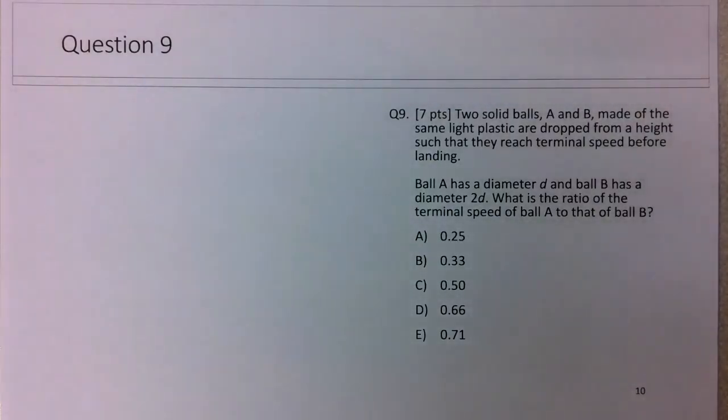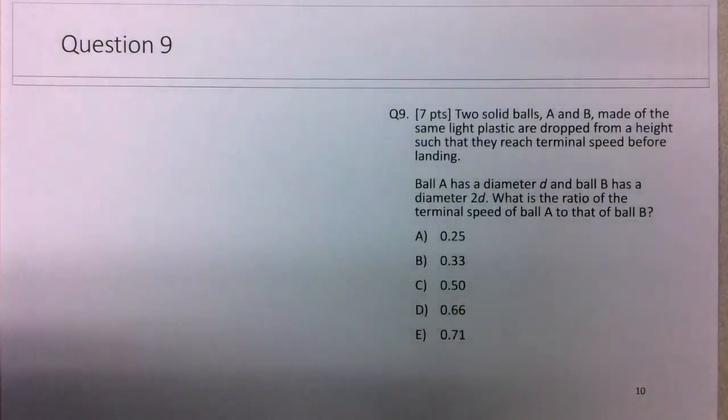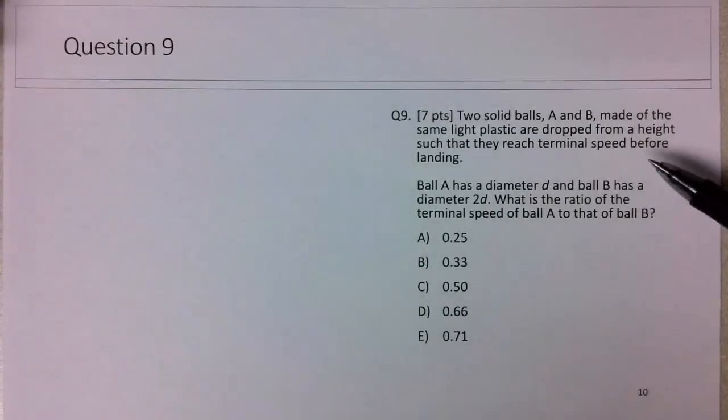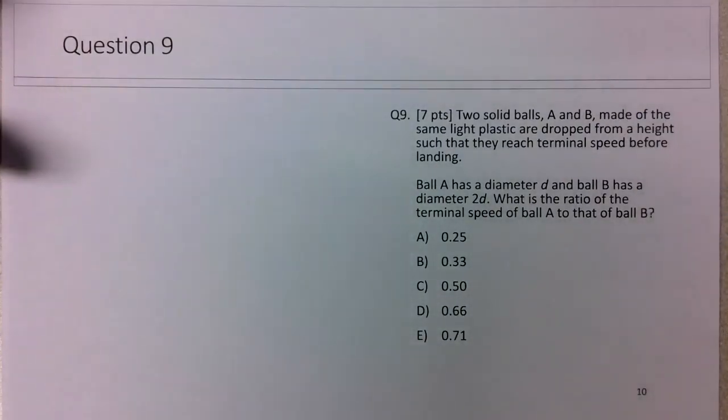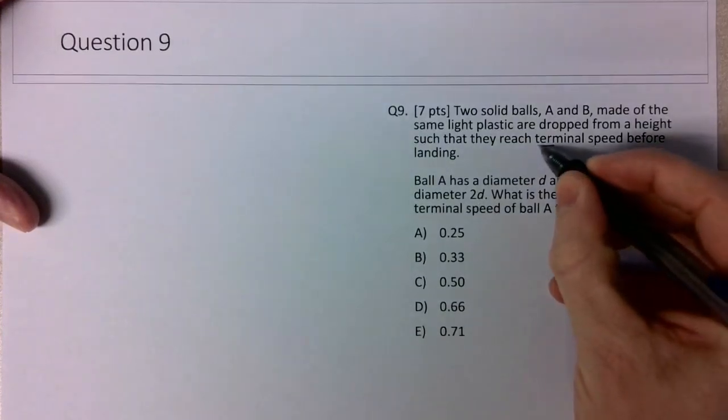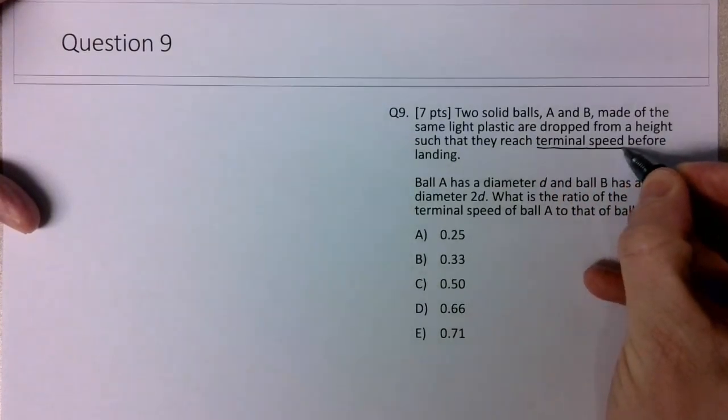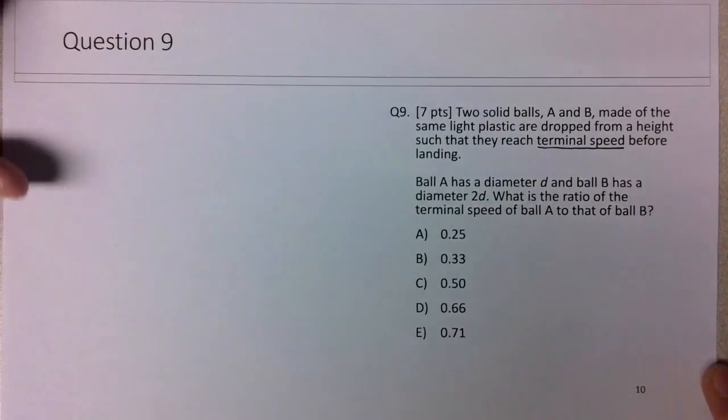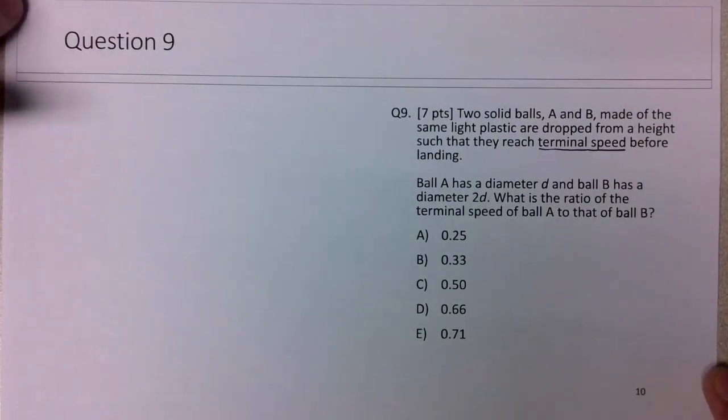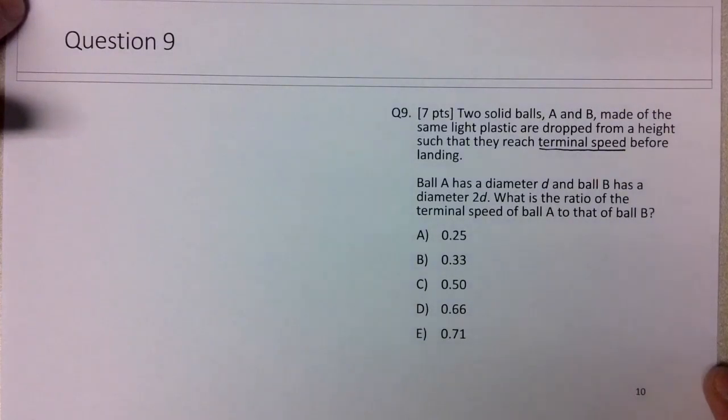In question 9 of the final exam review, we're looking at a drag question. You can tell from the code here that it's at terminal speed. It doesn't explicitly state that this is a drag question, but the concept of terminal speed is a drag concept. You can't reach terminal speed unless you have air resistance, so this is a drag question.